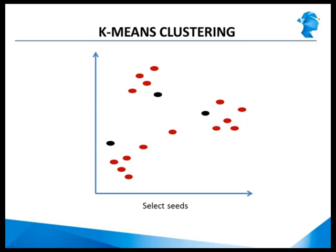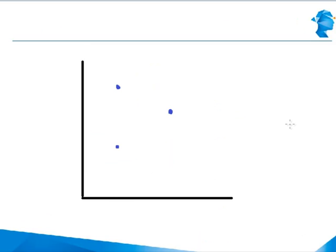How do we decide which observation is closer to which seed? For example, an observation in the center — how do we decide whether it's closer to the seed on the left or on the right? We use basic geometry: draw a straight line between the two seeds and then draw a perpendicular bisector to that line. Points on the left are closer to the left seed, and points on the right are closer to the right seed. We do this for all three pairs of seeds.